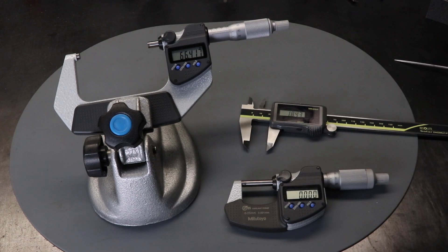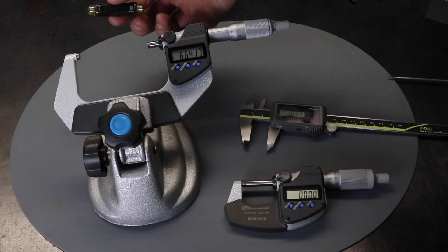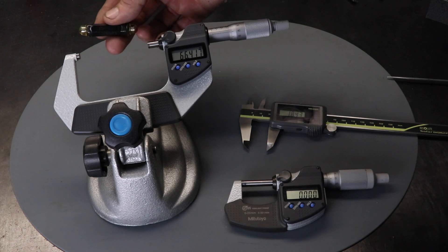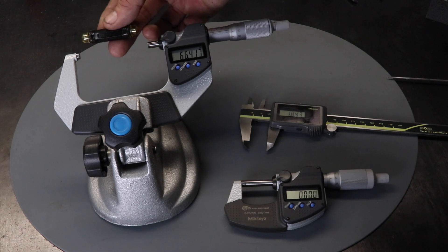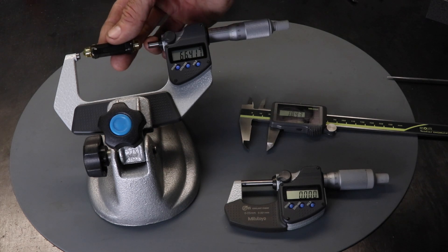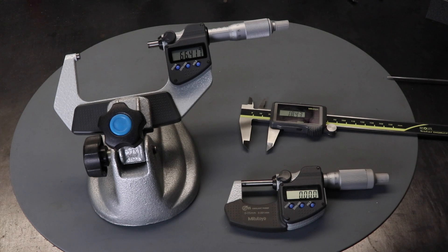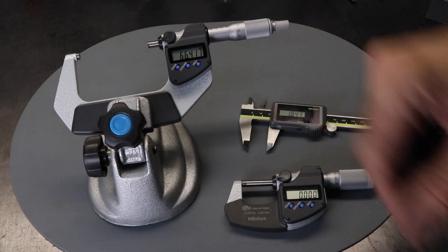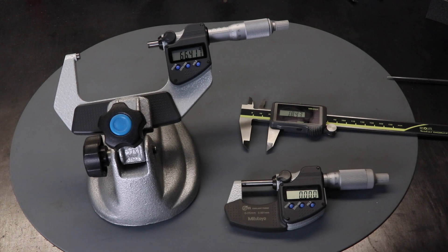For calibrating the larger one, because the jaws won't fully close, it comes with a standard. This has the protective end caps on it, and it's 50 millimeters plus minus zero microns. So you put this in here, close the jaws, measure it off, and then you can zero it out. Very easy to calibrate and use.